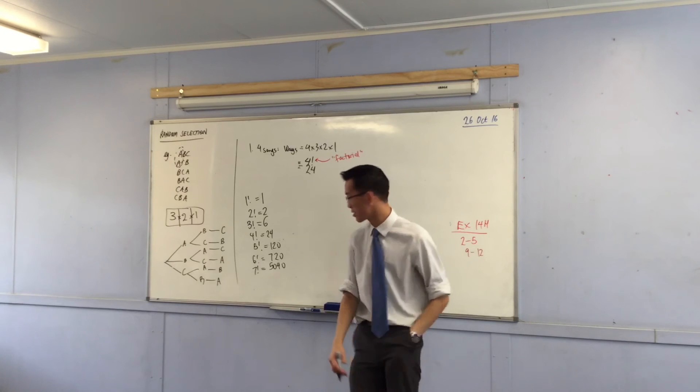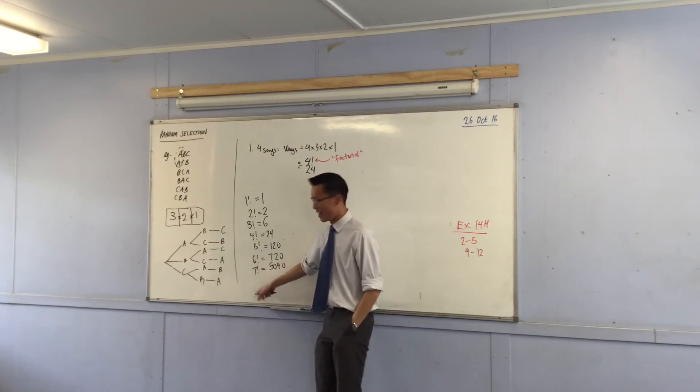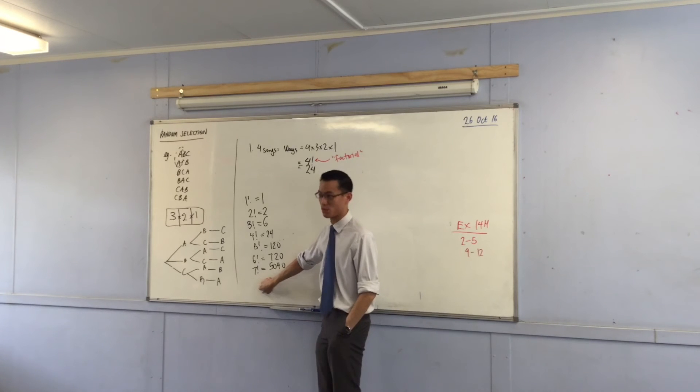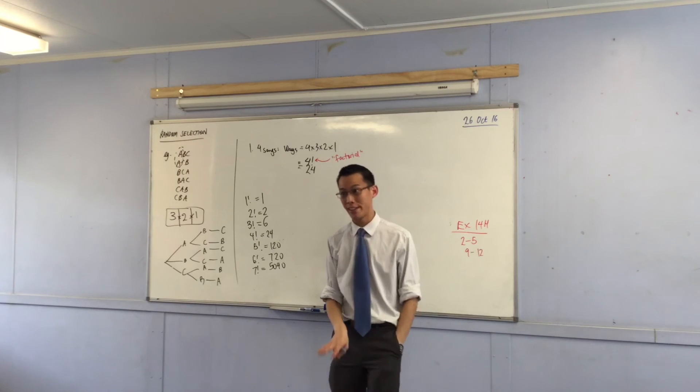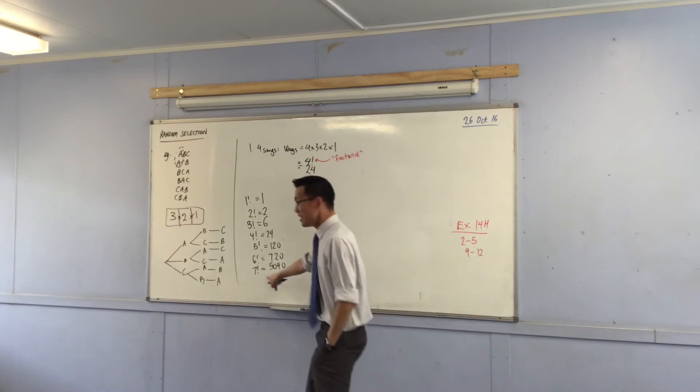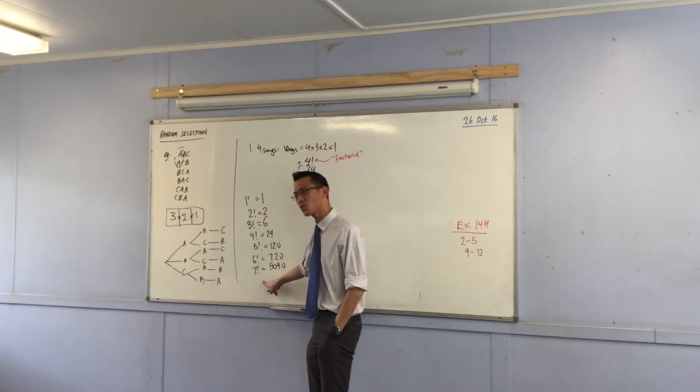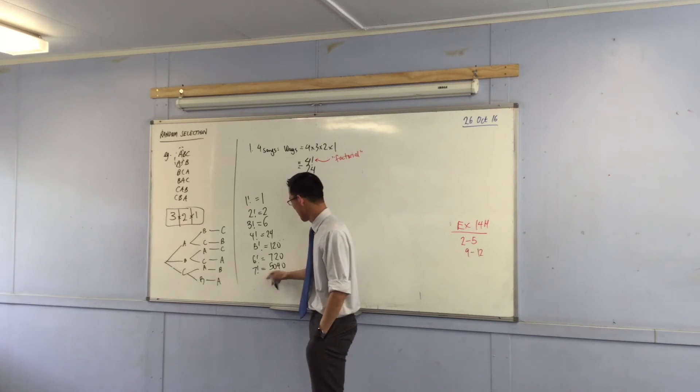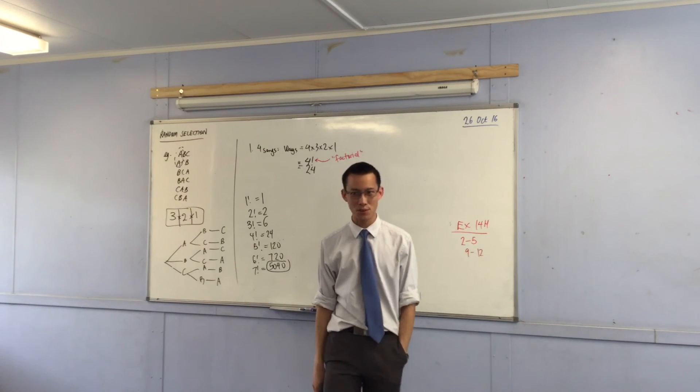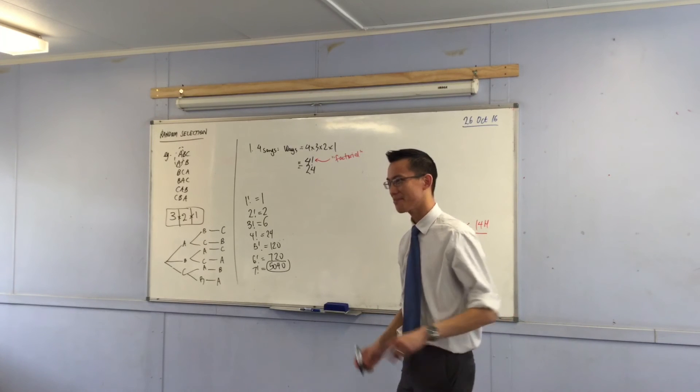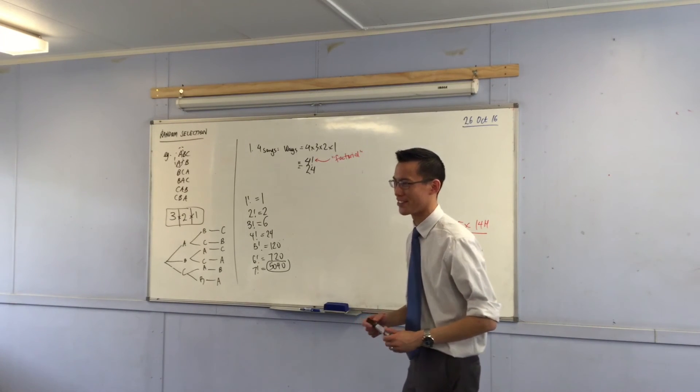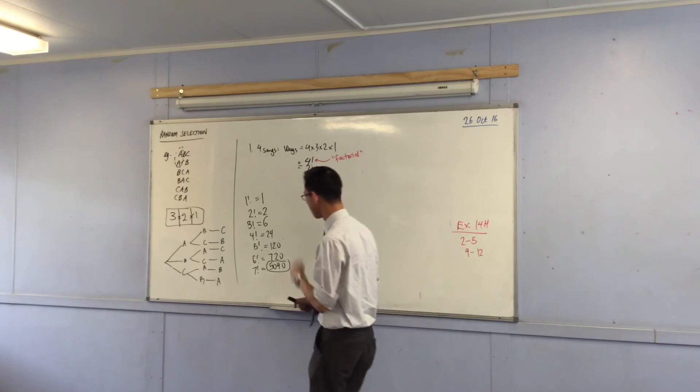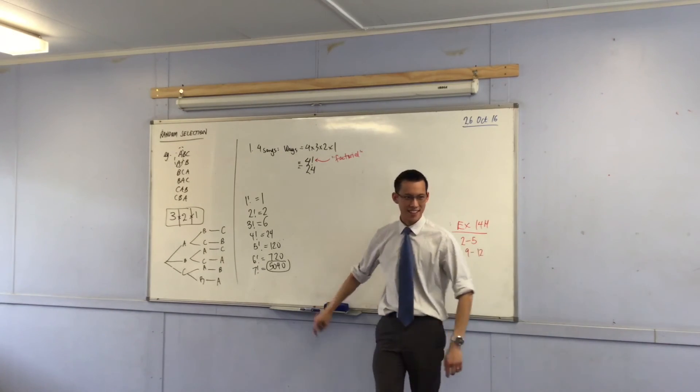Now, your calculator can tell you all these numbers. This is 7 times 6 times 5 times 4 times 3 times 2 times 1. Now, just have a look at these numbers. Look at how fast they grow. Really, really fast. Seven songs on your playlist, that's a really short playlist. But there are 5,040 ways to do it. I typed in 999. That's crazy. Your calculator won't be able to do it. It's like a math error. The largest one the calculator can do is 69.